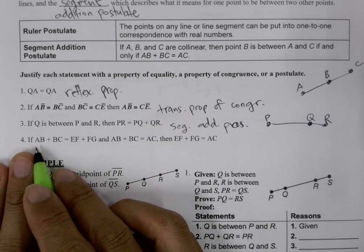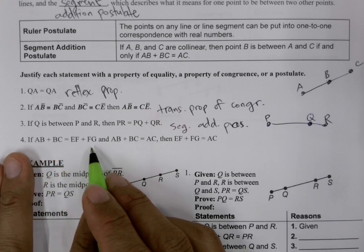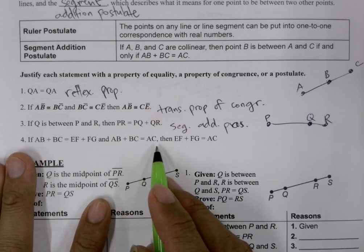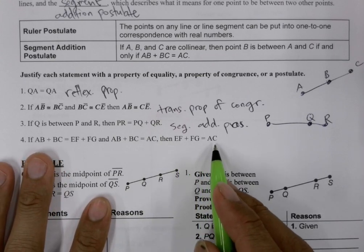Then here we have a measure of AB plus BC is equal to EF plus FG. And measure of AB plus BC is equal to AC. Then, EF plus FG is equal to AC.